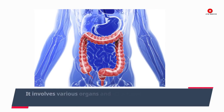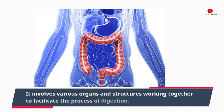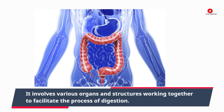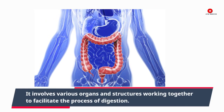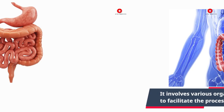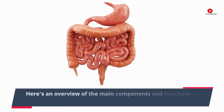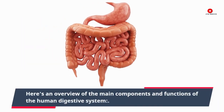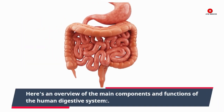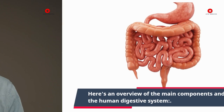It involves various organs and structures working together to facilitate the process of digestion. Here's an overview of the main components and functions of the human digestive system.